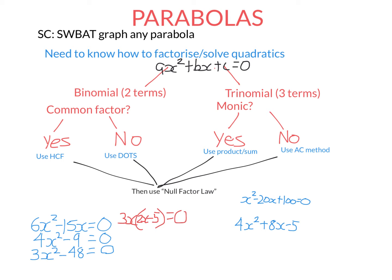So what I've done is factorised this quadratic — written it as something times something. We do this so we can use the null factor law, which says if something times something equals zero, either the first thing equals zero or the second thing equals zero. So if 3x equals zero, then x is zero. If 2x minus 5 equals zero, then x is 5 over 2. Those are the two solutions.